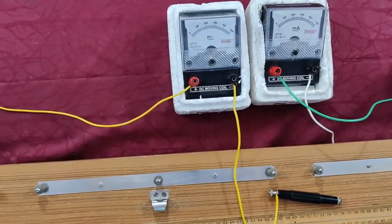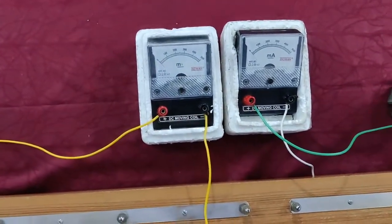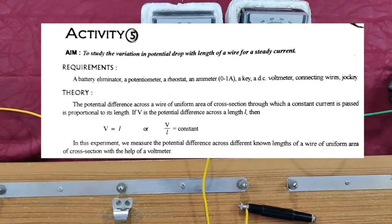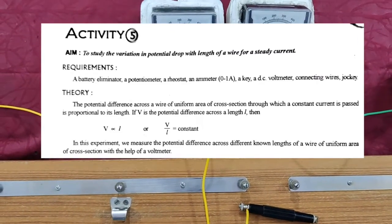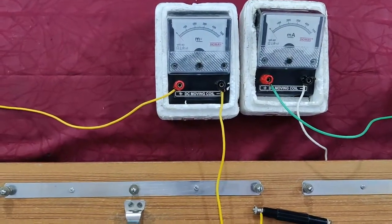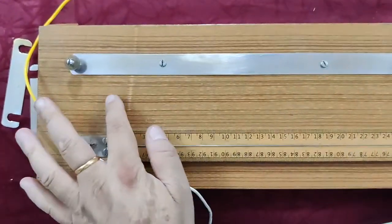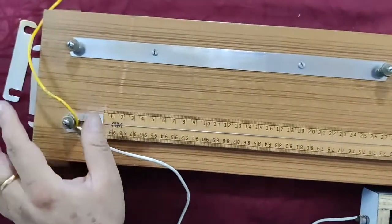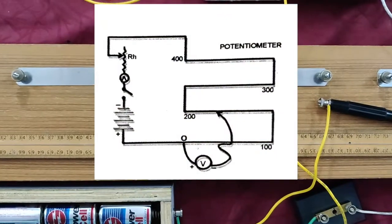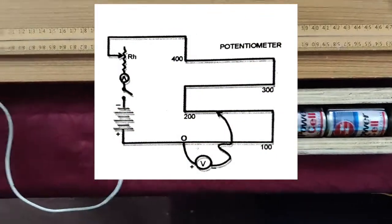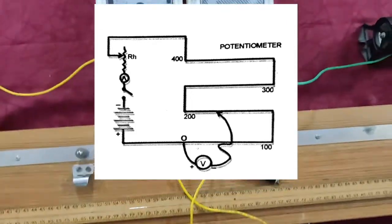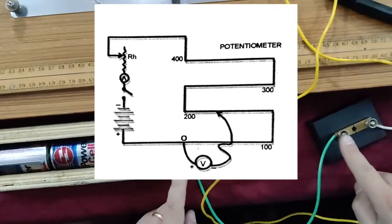This is the third activity from section A. The aim of this activity is to study the variation in potential drop with length of a wire for a steady current. This experiment will show you very clearly. First of all, we have used this meter bridge with copper strips, a wire of 1 meter length. Point A connects to battery positive, point A to one meter negative, then battery negative to plug key.